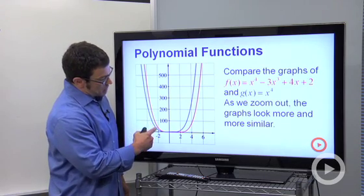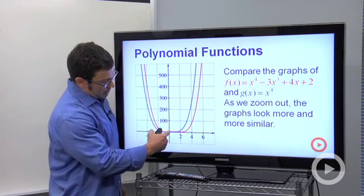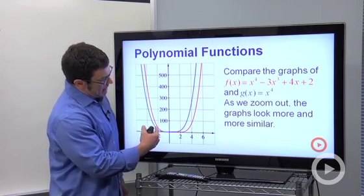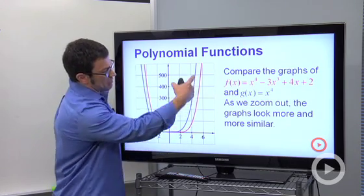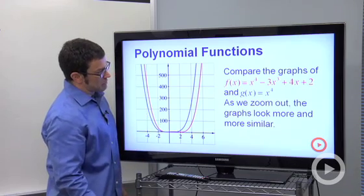Notice that as we zoom out, the details of the polynomial function are completely gone. The little wobble it had, and the ends are starting to look more and more alike. And as we zoom out more, now we're on the order of a million. The two graphs are really close together.